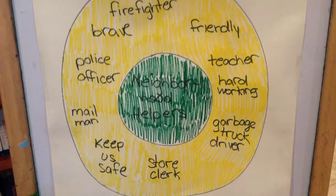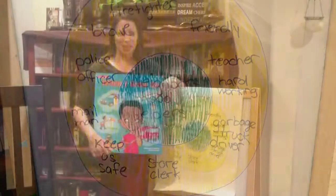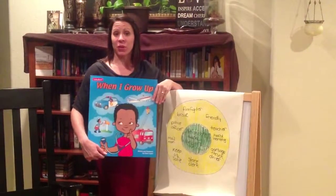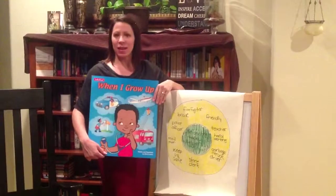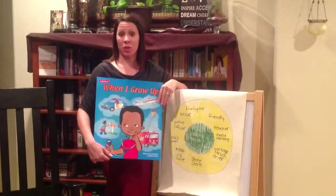When your circle map is complete, it should look like this. This map is going to be so helpful in the rest of the writing process, but we'll get to that later. I hope that this was helpful for you. I'm so excited to move forward with our neighborhood helper unit.